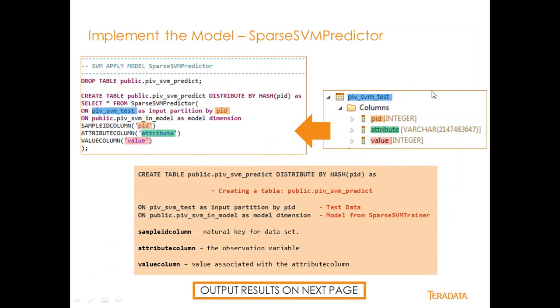So to do this, this is my input schema for my test data. And I'm going to use that right here, PIV SVM test data right here, as input partition by PID. So we're going to partition all of our data because I have 34 outcomes per patient in here by this patient identifier. I'm going to use the PIV SVM in model that I rendered, generated from the previous SVM train statement in the previous slides. And then my sample ID is my PID.